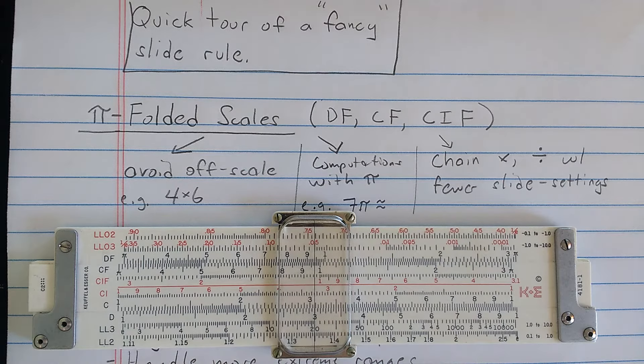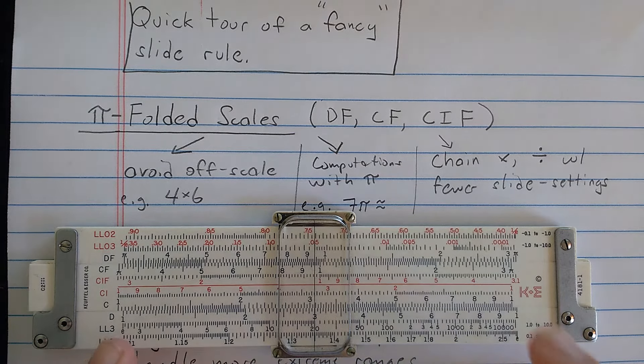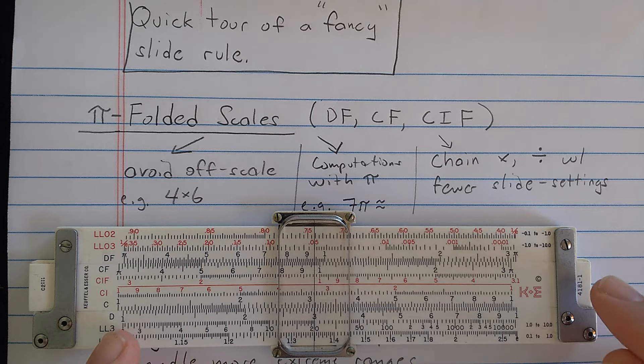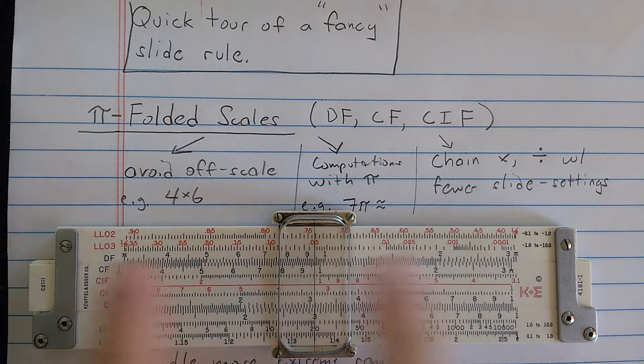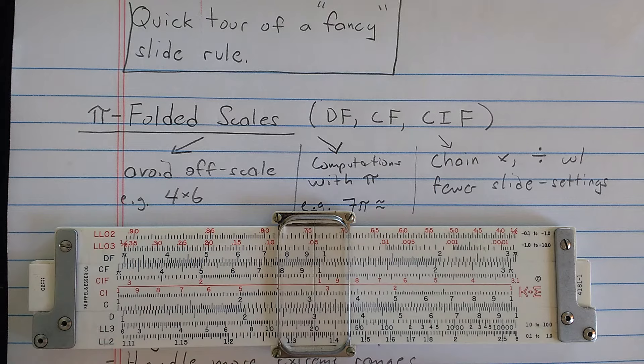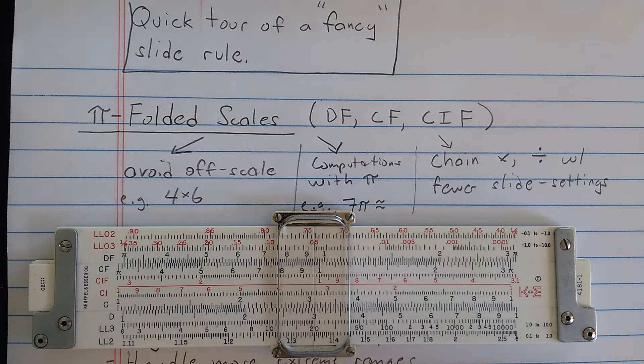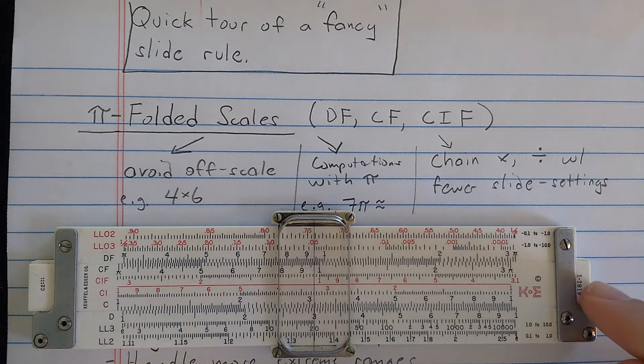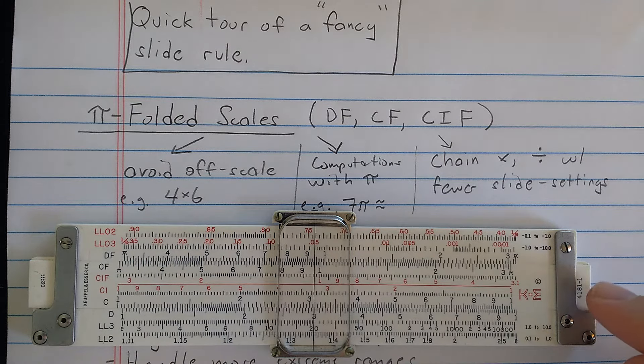This is a pretty common slide rule, the KNE 4181-1. This is also 5 inches like the one we were using, just makes it easy for the video. There is a 10 inch version of this called the 4181-3.